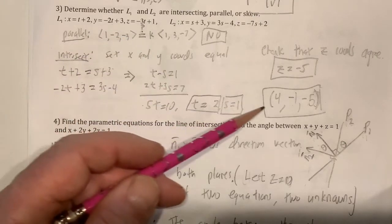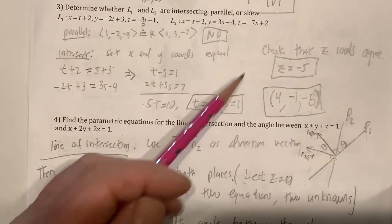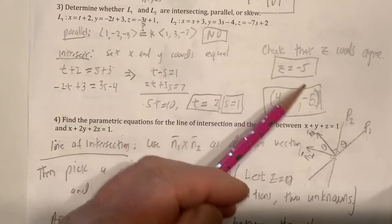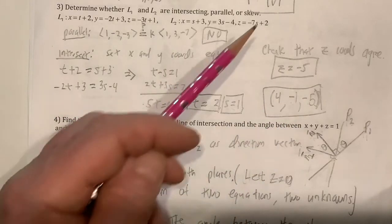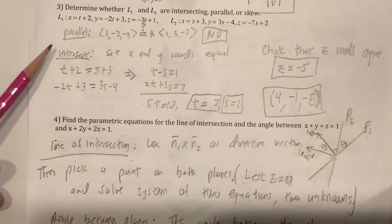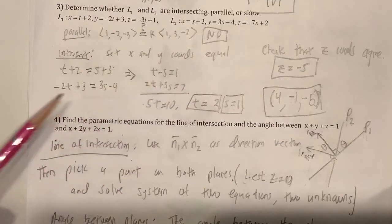If you plug those into the equations for x and y, you get 4 and negative 1. But wait, make sure you plug those into the z coordinates and make sure they agree. And in this case, they do. Negative 5. Now, the lines would be skew if you showed it wasn't parallel. And when you try to show that it intersect, you got no solution. In this case, you would say skew.